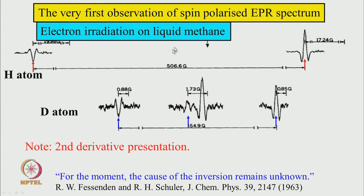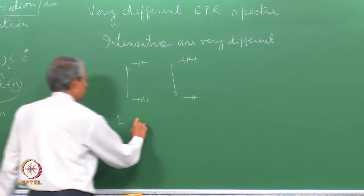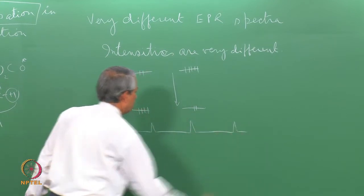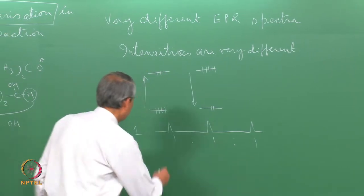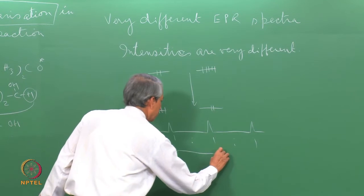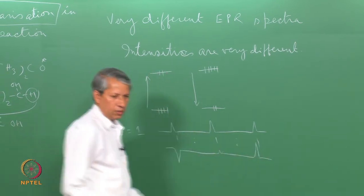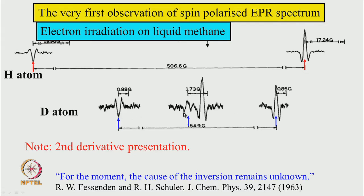They also did the experiment with deuterated methane to produce a deuterium atom, which has nuclear spin I = 1. So with I = 1, one expects three lines of equal intensity 1:1:1. Instead, they found one line negative, one not very large, and one opposite — a very unusual pattern. This was the first observation that something unusual was happening, and they wrote in their paper that for the moment the cause of the inversion remains unknown.